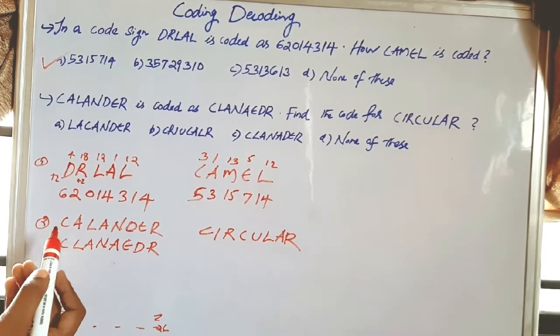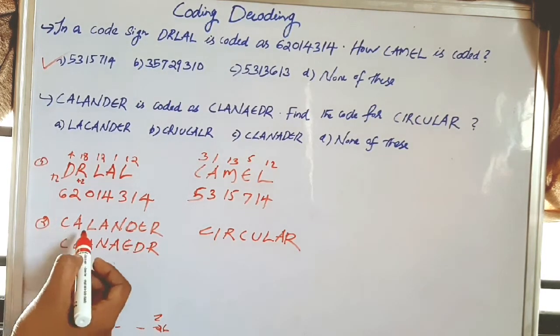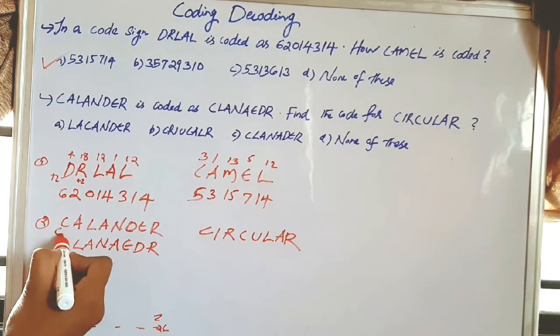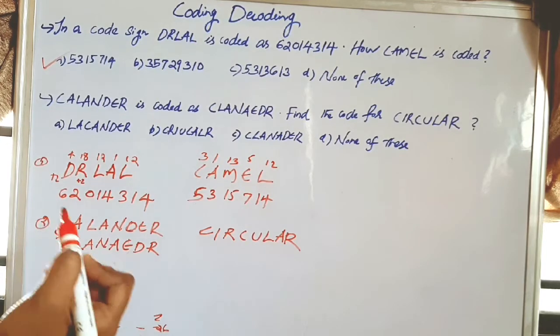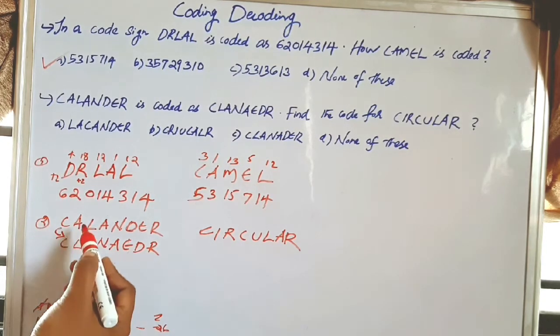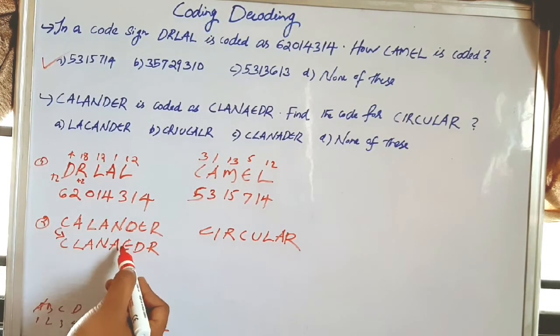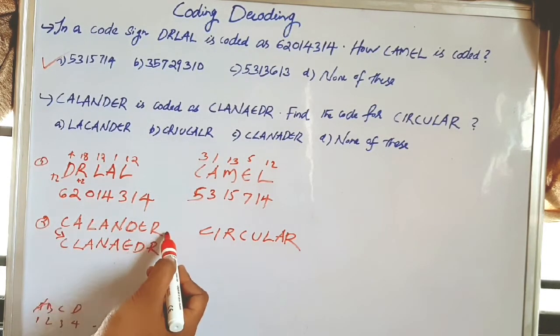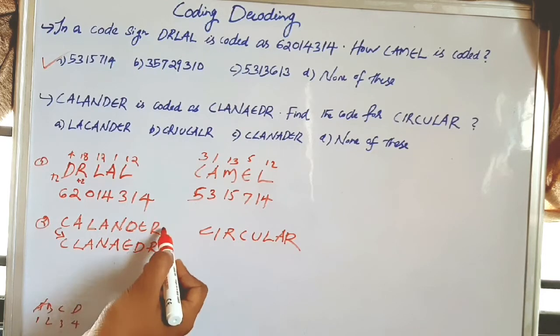The first letter is C and the code starts with C. The last letter is also rearranged according to a positional pattern within the word.